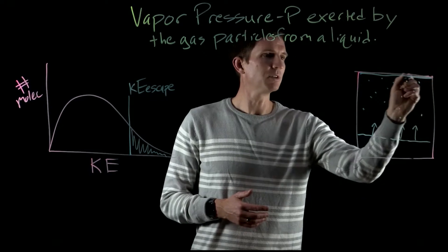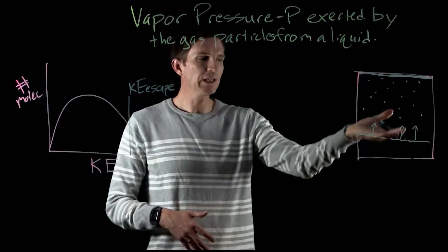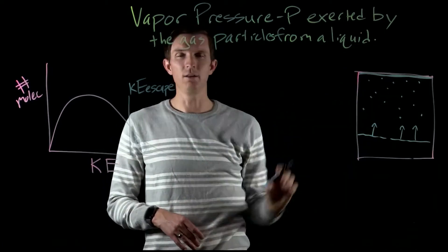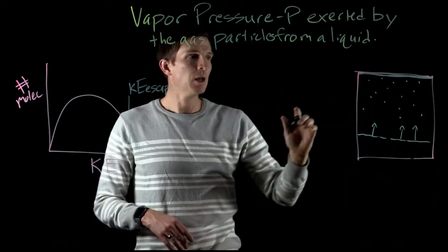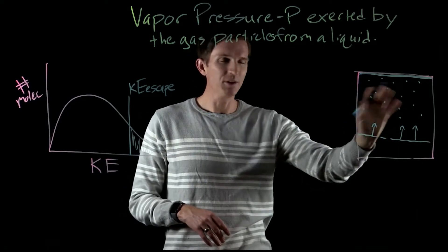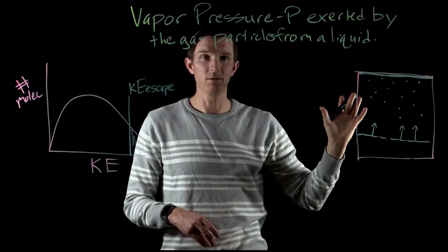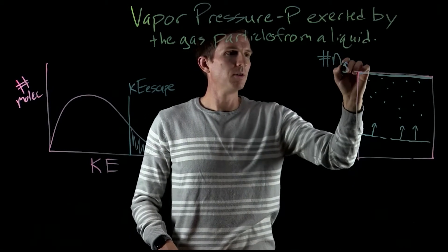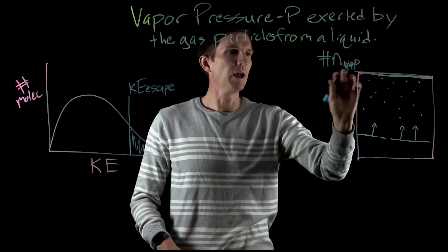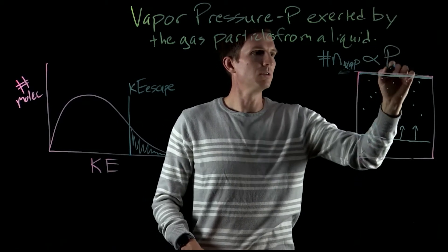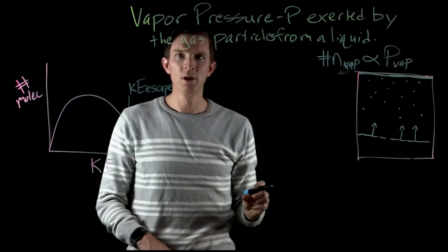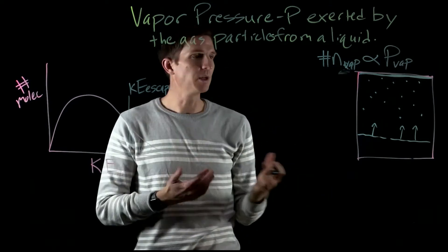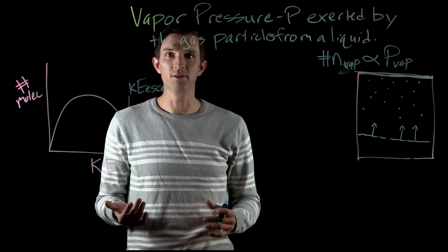In this case we're thinking of a sealed container, so once they leave they're not just going to leave the space the liquid is occupying. Since we've closed this off, we're looking at how these gas particles exert a pressure. The number of moles of vapor we have is going to be proportional to our vapor pressure — the more particles we get up here, the higher the vapor pressure, which makes sense with the gas laws we've previously talked about.